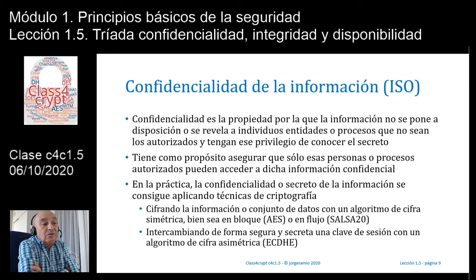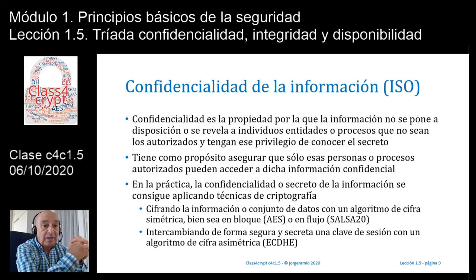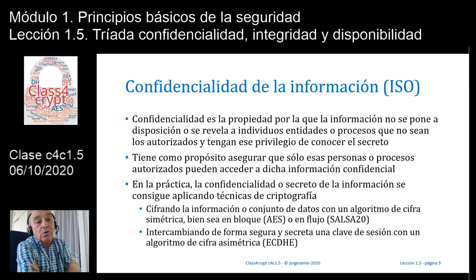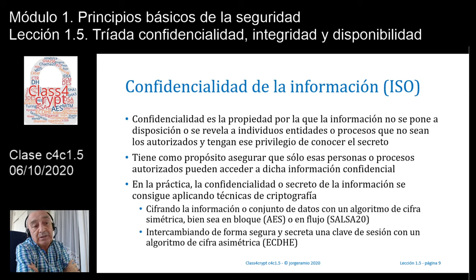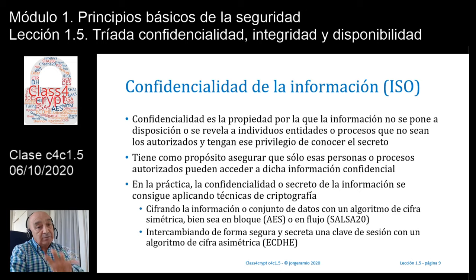También podemos hablar de confidencialidad intercambiando de forma segura y secreta una clave de sesión, ya no cifrando un volumen grande de información, sino una clave de sesión. Esto comienza con la propuesta de Diffie-Hellman, de lo que se conoce como criptografía asimétrica, y uno de los algoritmos más utilizados hoy en día en Internet SSL/TLS sería el ECDHE, que significa Elliptic Curve Diffie-Hellman Ephemeral, es decir, intercambio de clave con Diffie-Hellman y curvas elípticas del tipo efímero. Aquí tenemos un ejemplo de cómo proteger un secreto, bien sea el de toda la información o el de una clave que quiero enviar entre un emisor y un receptor, o bien entre un cliente y un servidor.